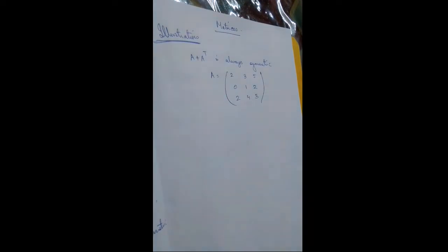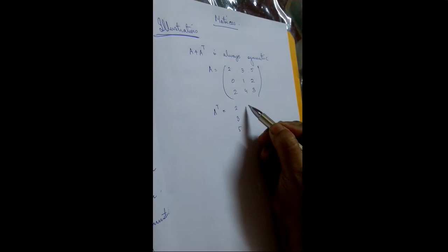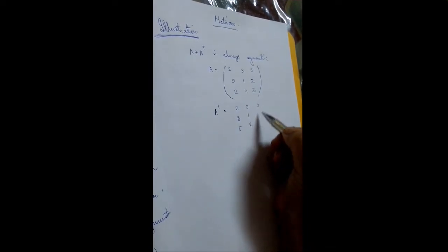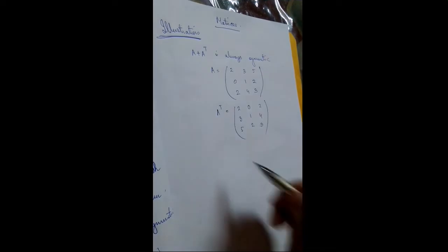So I have the matrix A here. A transposed will be given by writing the first row elements as the first column elements. So the first column is 2, 3, 5; second column 0, 1, 2; third column 2, 4, 3. This is our A transposed. A plus A transposed will be obtained by adding the corresponding elements of A and A transposed.